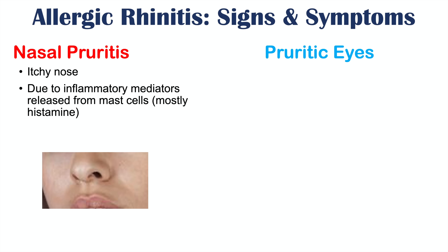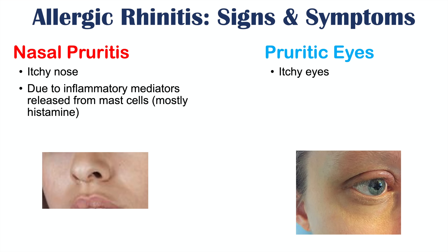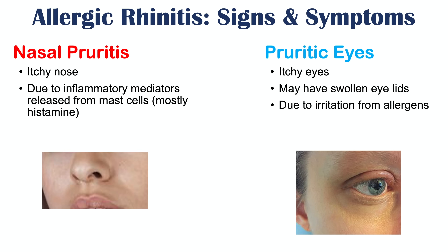Similarly, patients will also have pruritic (itchy) eyes, and swollen eyelids may be seen as well. This is due to irritation from allergens and histamine, which causes the sensation of itching in the eyes or around the eyes.